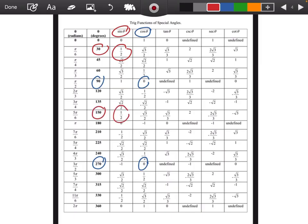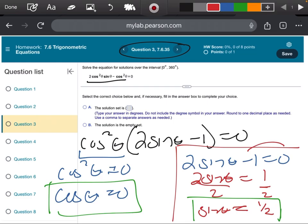So the answers I'm coming up with are 30, 90, 150, 270. So I'm coming up with 30, 90, 150, and 270.